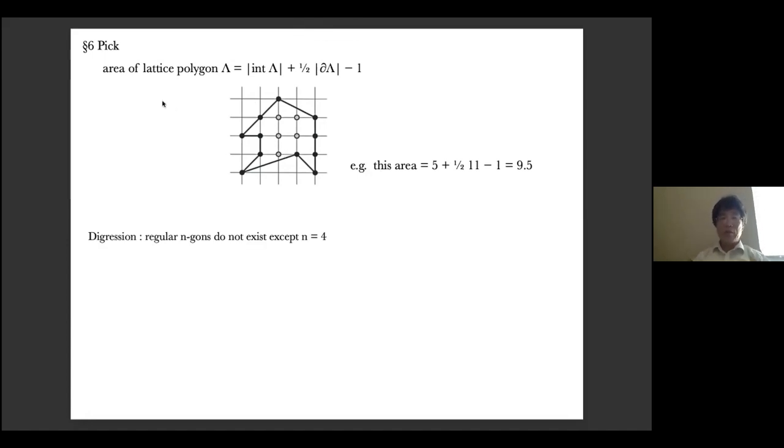Before we prove Pick, to derive Pick from physics, a little digression. Pick's formula tells us interesting things that are not often popularly known. And that is the question of which regular n-gons exist in the lattice geometry. Regular four-gons are easy to draw in lattice geometry. It turns out that those are the only regular n-gons. In other words, the regular n-gons do not exist at all in lattice geometry, except when n equals four. For example, equilateral triangles don't exist among the lattice polygons.